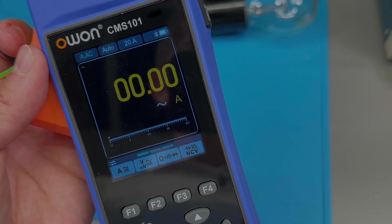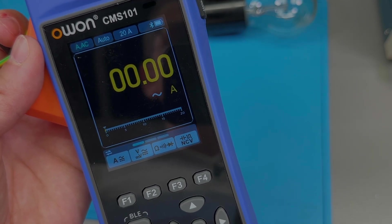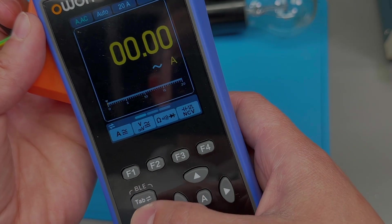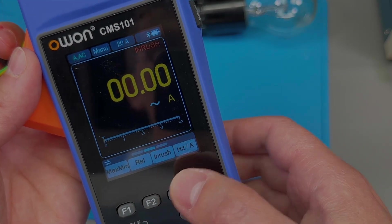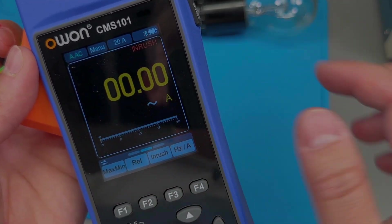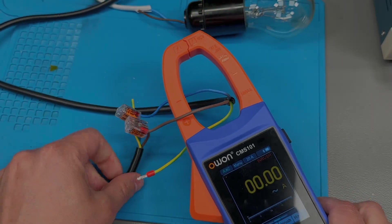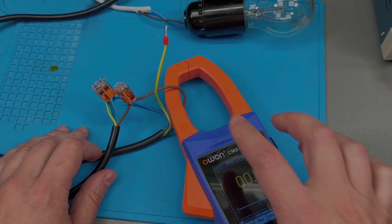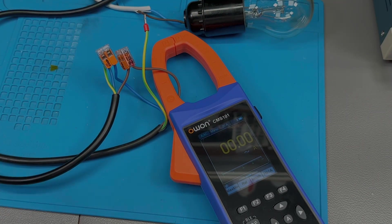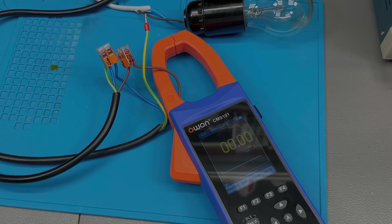The meter does have inrush current measurement capability, and the way to activate that is by switching to the next tab and then activating the inrush function. Then it will say inrush on screen. So the way I have this connected right now is to my air compressor, and I'm gonna turn that on to capture the inrush current.